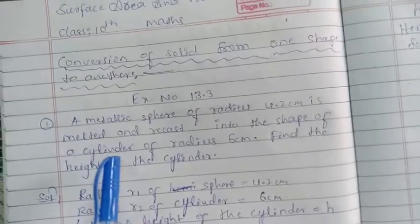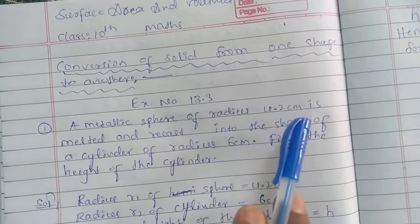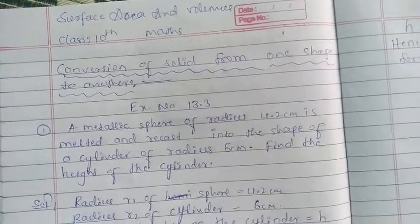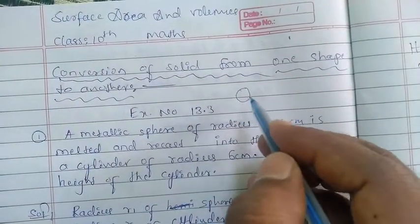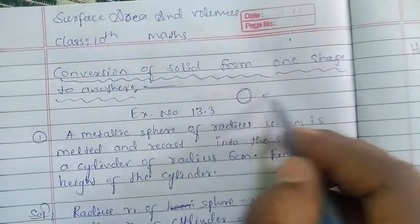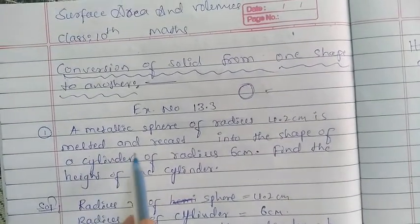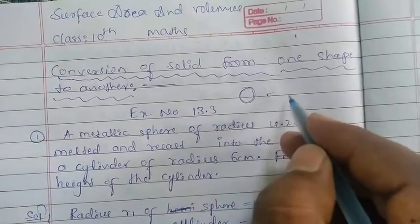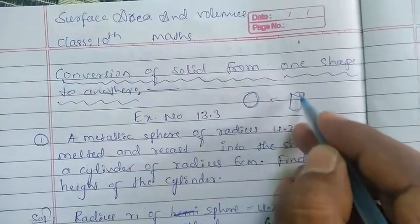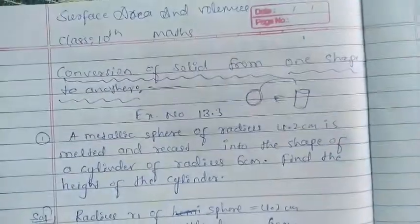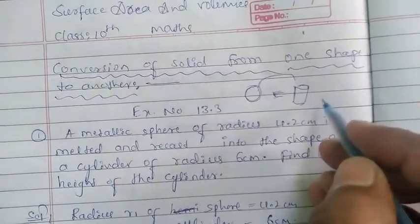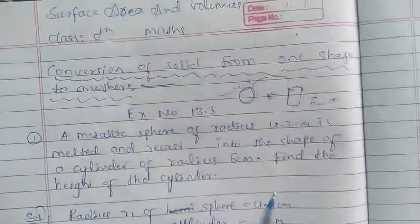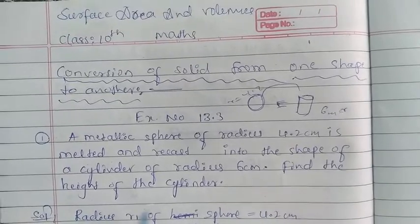See the first example: a metallic sphere of radius 4.2 centimeters. So the shape here is a sphere with radius 4.2 cm. I'll draw a small diagram — this is a sphere shape. It is melted and recast into the shape of a cylinder. After melting, they are making a new solid: a cylinder shape, with radius 6 centimeters. The question asks to find the height of the cylinder.